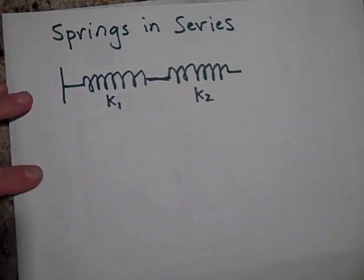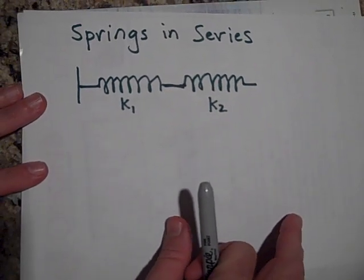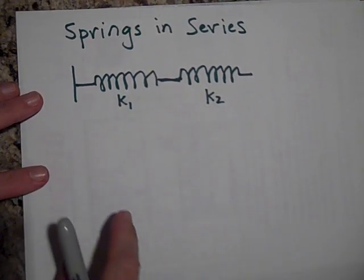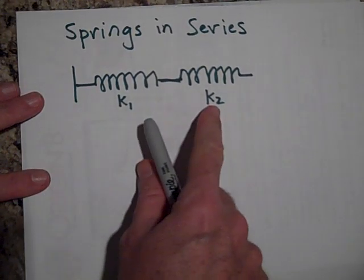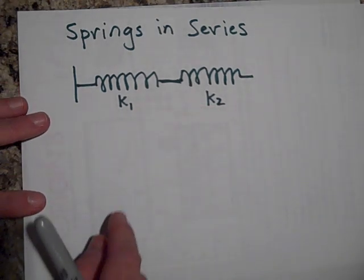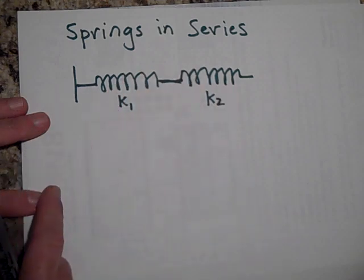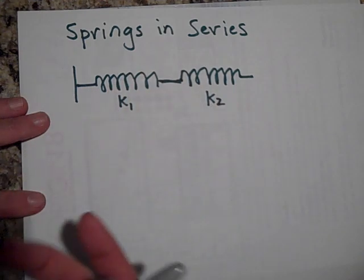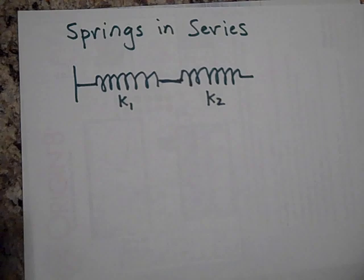Series just means that they're one right after the other and we want to be able to develop what the effective spring constant will be of the combination of these two springs. So we can treat these as though they're one spring with a particular k called the effective spring constant.